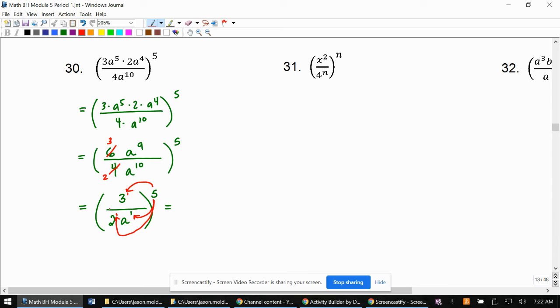because 3 to the fifth, all of its factors are 3, and 2 to the fifth, all of its factors are 2. And so I know that they won't have any common factors.